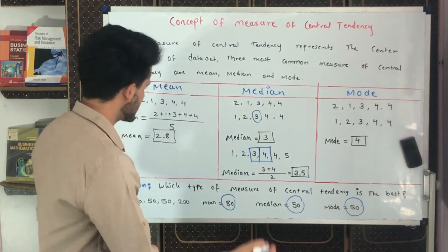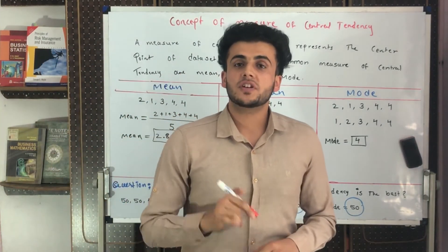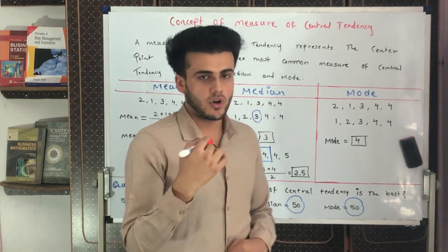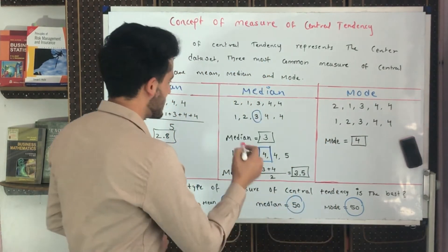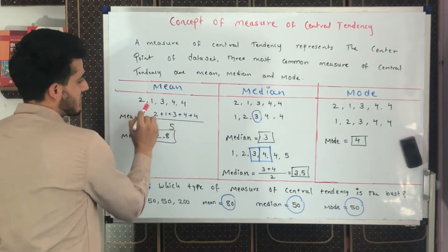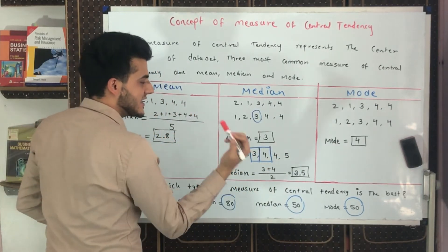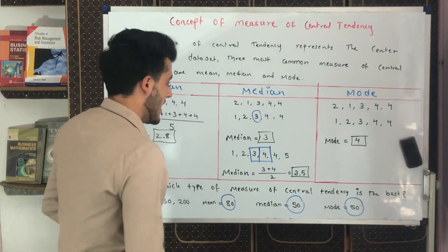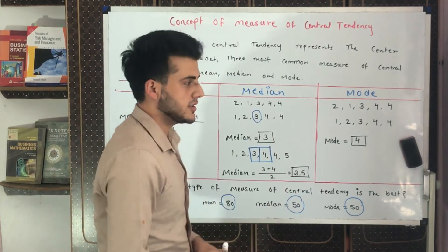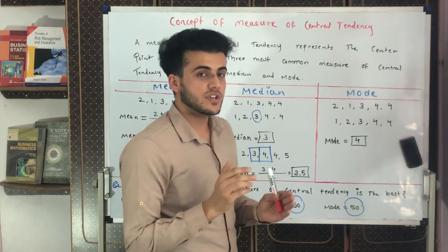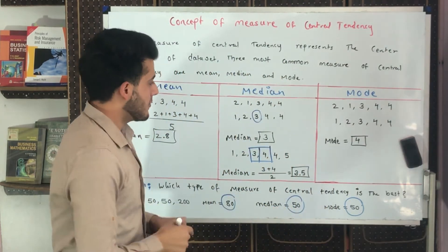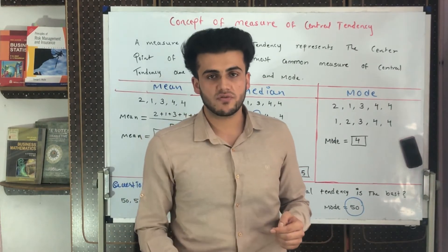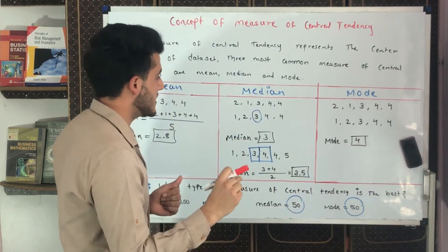The next measure is median. For median, we first arrange the numbers in ascending or descending order — the usual way is from smallest to highest, which is ascending order. With our data set two, one, three, four, four, we rearrange it as one, two, three, four, four. We have five numbers, so we find the central one. If we do not arrange in ascending or descending order, we will not be able to identify the smallest and highest values.